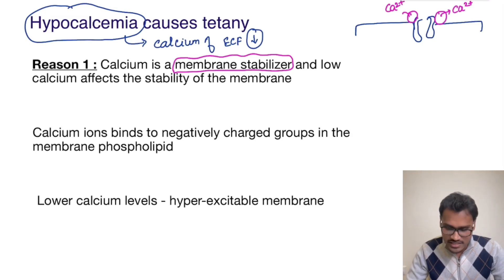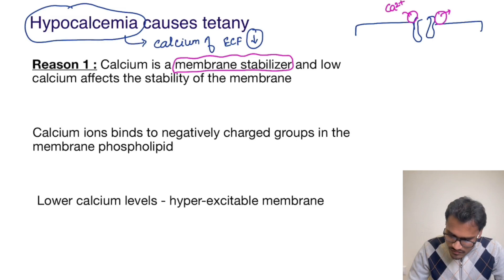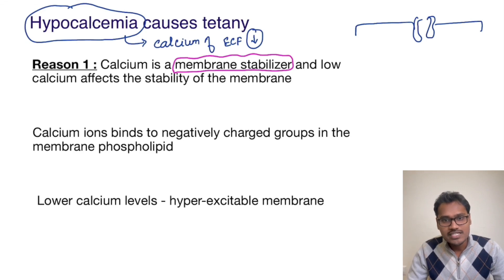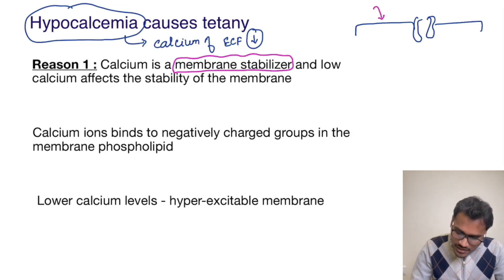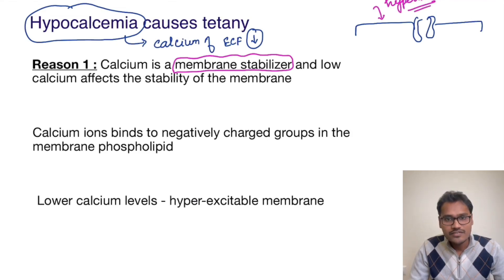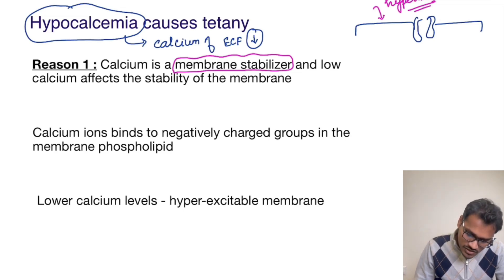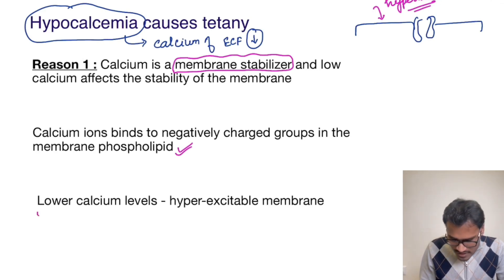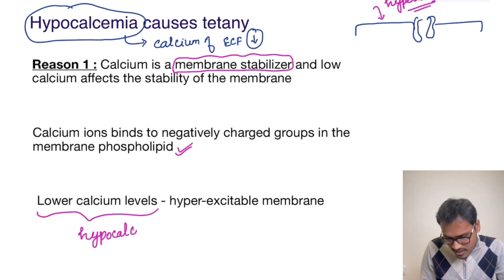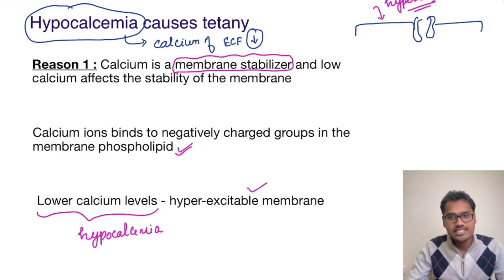Now what is our condition? The condition is hypocalcemia. So there is non-availability of this calcium to stabilize the membrane, and the stability of the membrane is affected — the membrane has become destabilized. So even a slight impulse from a neuron will lead to a hyperexcitable state. The calcium ions usually bind to the negatively charged groups in the membrane phospholipids to stabilize them. Lower calcium levels — which is our hypocalcemia — means the membrane is not stabilized, leading to a hyperexcitable membrane.